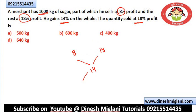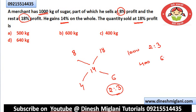Now apply alligation: 18 minus 14 = 4, and 14 minus 8 = 6. So the ratio is 4:6, which simplifies to 2:3. It means I have to divide 1000 into the ratio 2:3. So one part is 400 and the second part is 600. The question asks for the quantity sold at 18% profit, which is 600 kg. Hence B is my answer.